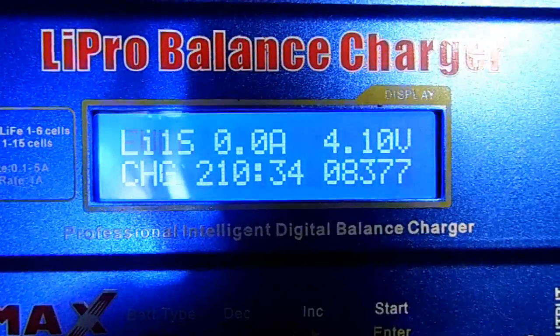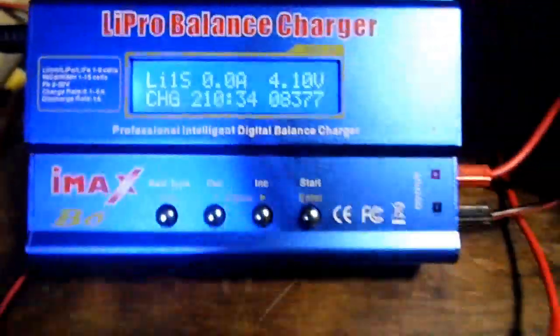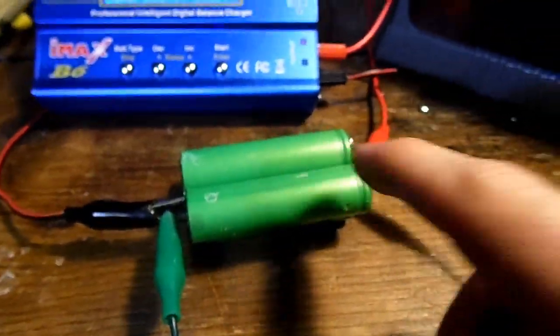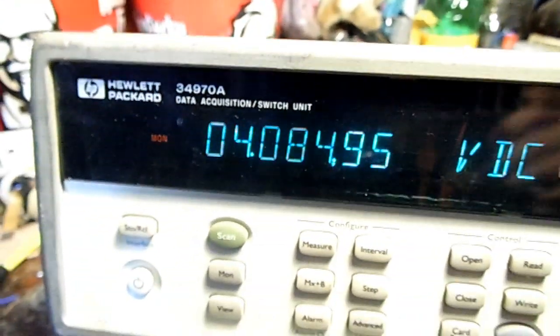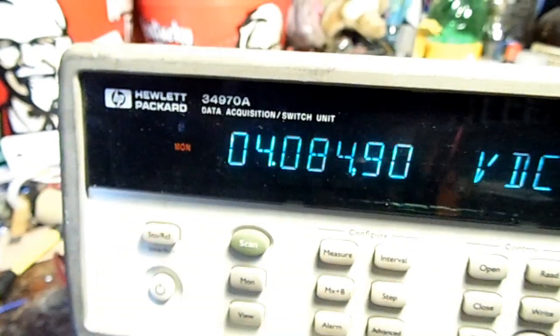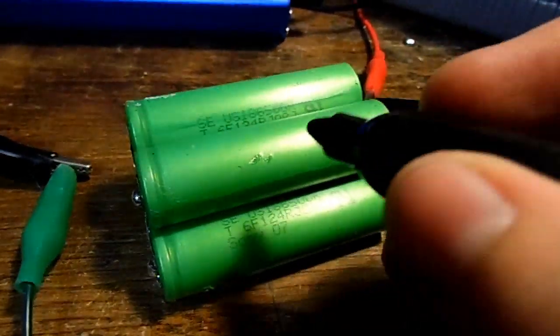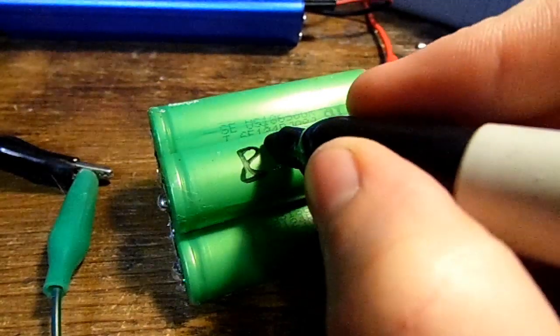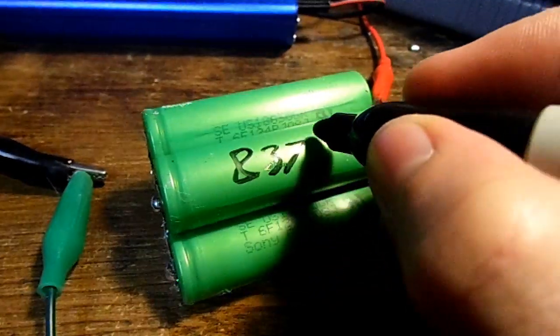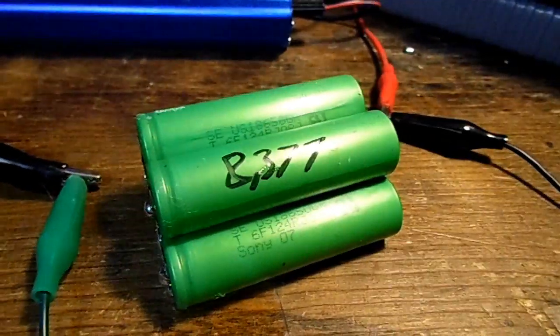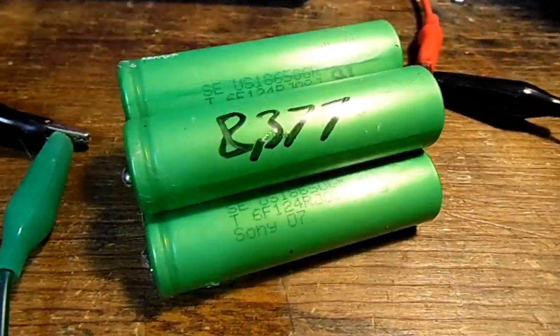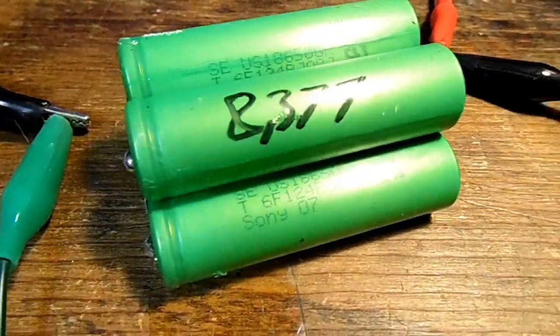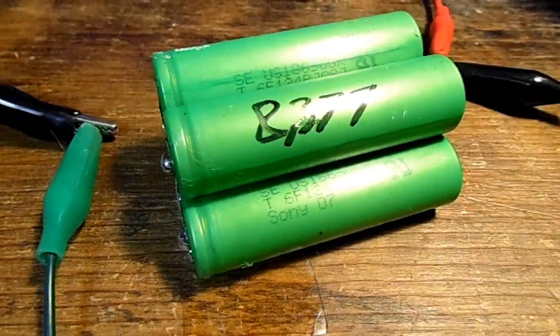The results are in. It has 8.4 amp hours, so that's 2.1 amp hours for each cell. And of course I only charged it to 4.05 volts. We'll say 2.1 amp hours each.